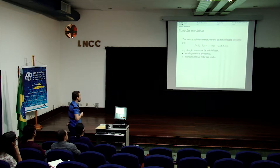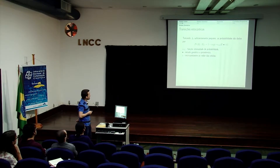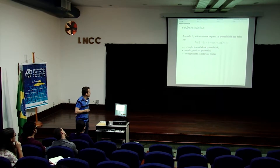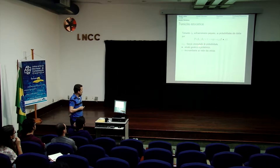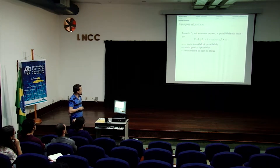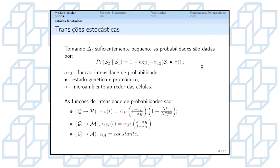Essas transições estocásticas são dadas, de modo geral, pela seguinte probabilidade. Dado um estado S1, a probabilidade de ela se tornar um estado S2 é definida por funções de intensidade que nós definimos para cada tipo de transição.